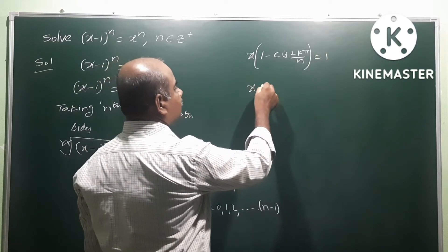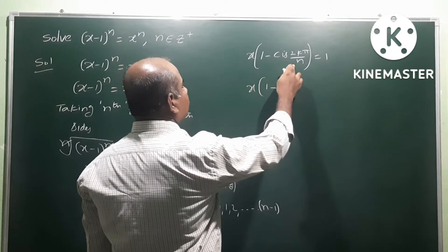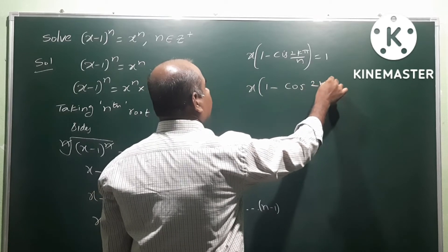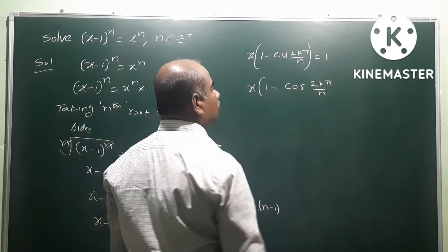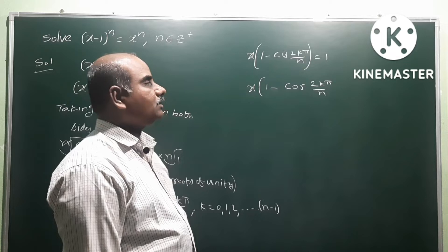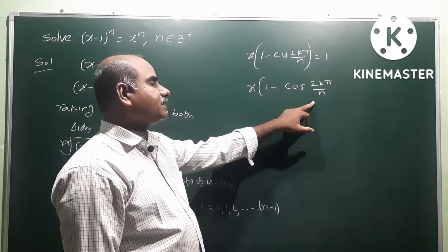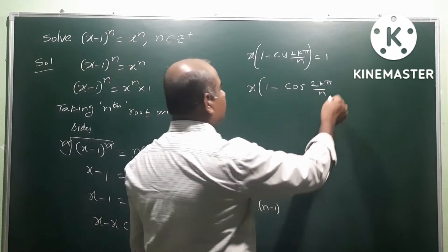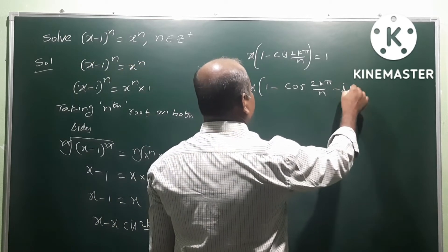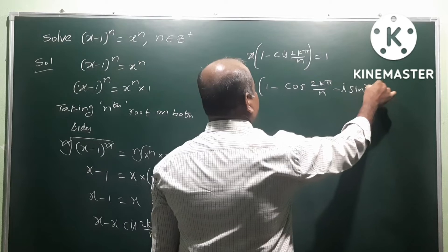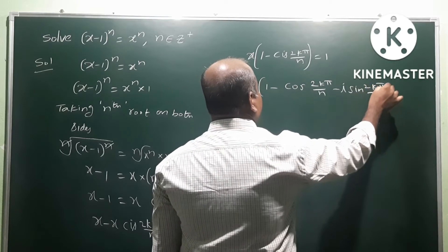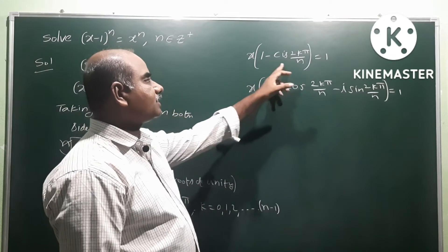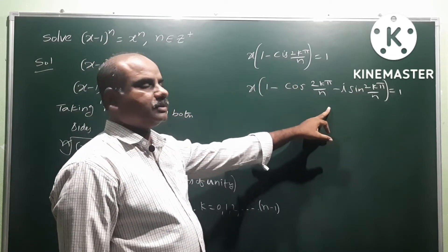So x times (1 - cis(2kπ/n)) means (1 - (cos(2kπ/n) + i·sin(2kπ/n))). Cis is cos plus i sine. When we multiply minus into it, we get (1 - cos(2kπ/n) - i·sin(2kπ/n)) equals 1.